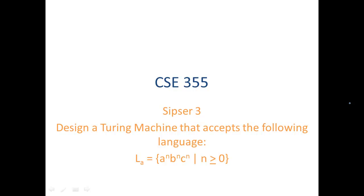In this video, we show how to design a Turing machine that accepts the following language. LA is the language of strings with the form A to the N, B to the N, C to the N, where N is greater than or equal to zero. So we could have ABC, AABBCC, three A's, three B's, three C's in that order, or we could have the empty string. These are all in this language.